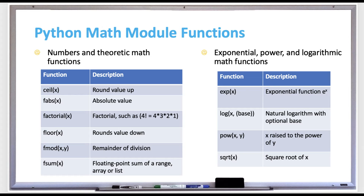The table on the right shows exponential, power, and logarithmic math functions. There's exp for exponential functions, log for natural logarithm with optional base, pow which is x raised to the power of y, and sqrt which gives you the square root of x if x is your argument.